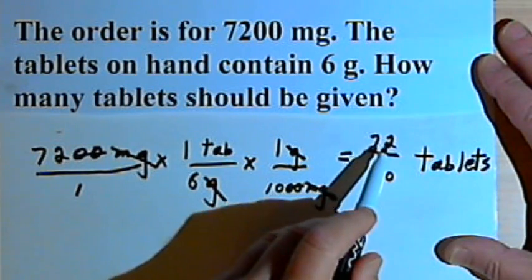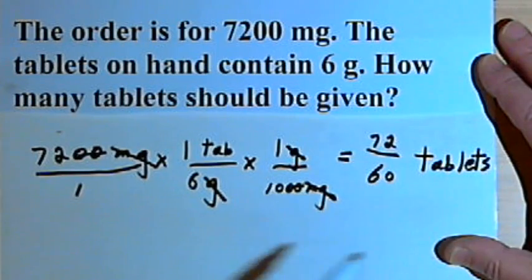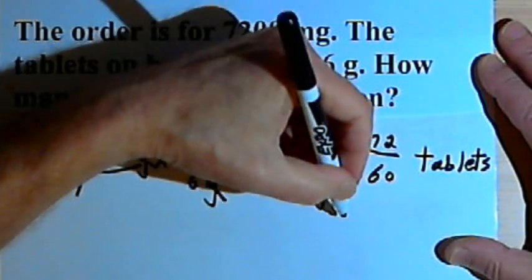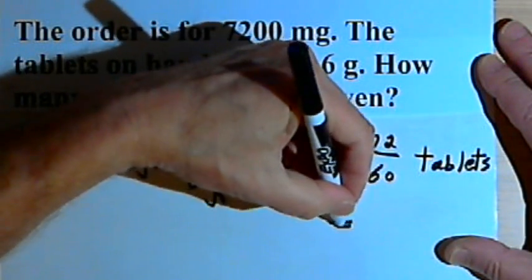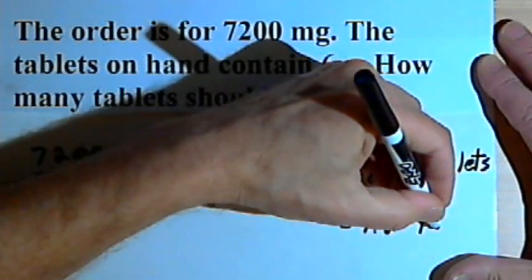I've got 72 over 60 tablets. If I put that into a calculator, what I'm going to find is that that equals 1.2 tablets.